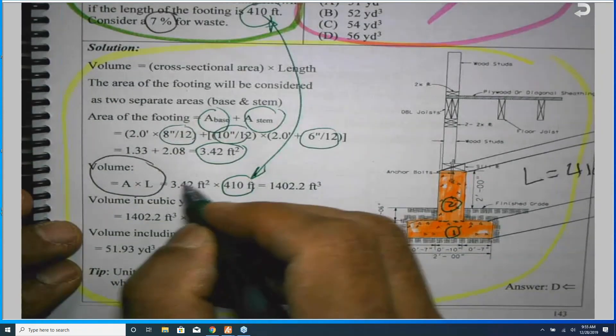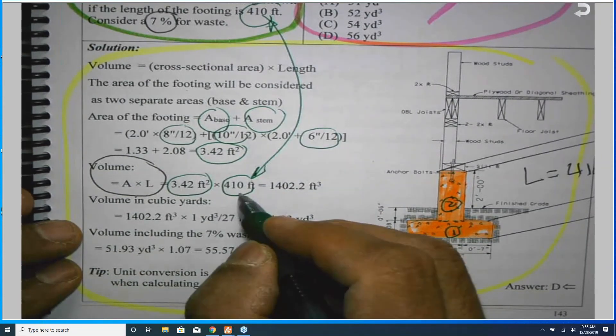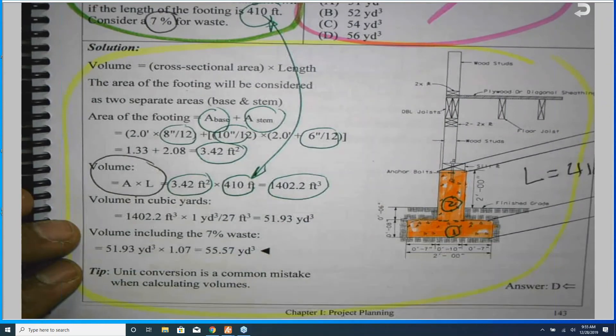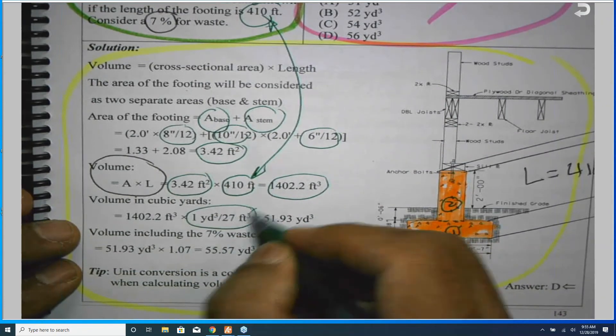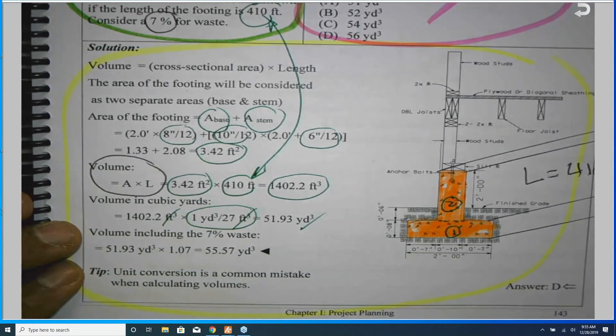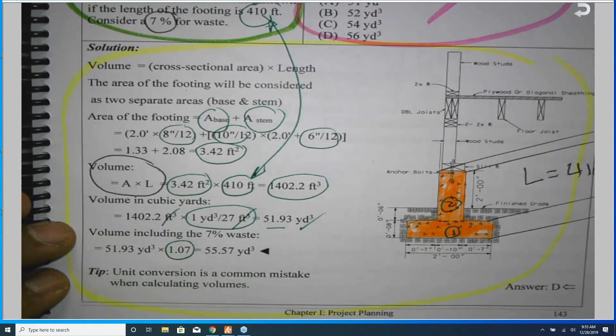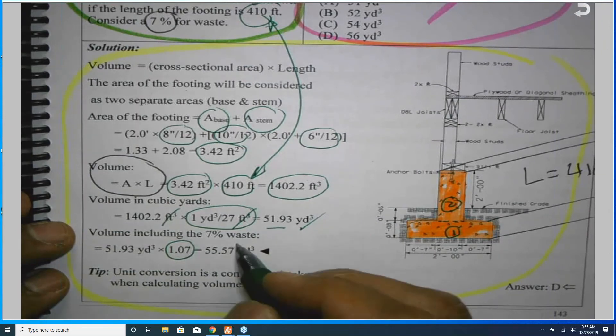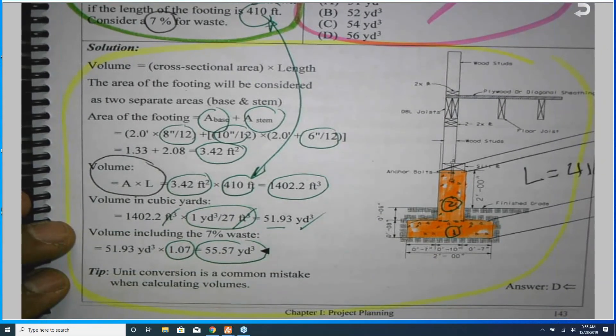So the volume equals the cross-sectional area times the length, give me this. I divided by this - you see, units, always cubic feet will cancel cubic feet. What is left is cubic yards. So I ended with 51.93. I need to consider the waste, which is the 1 plus the waste percent. We ended with 55.57.